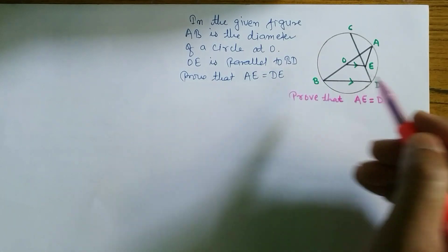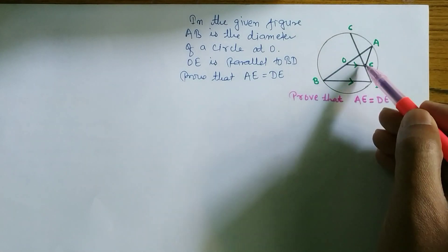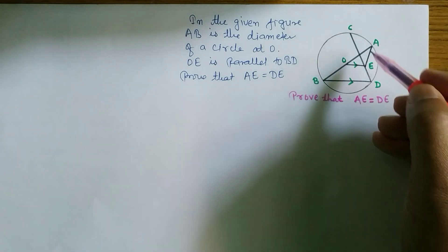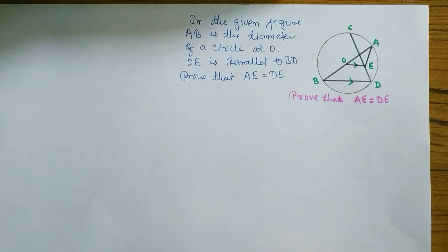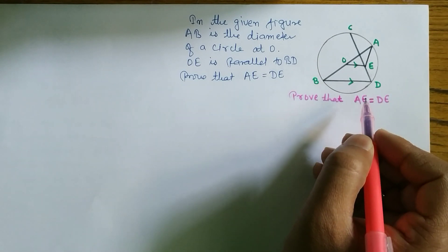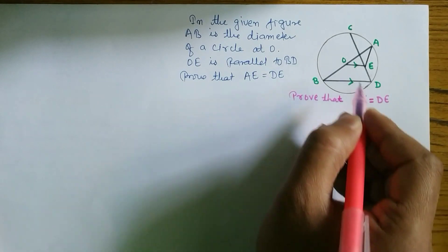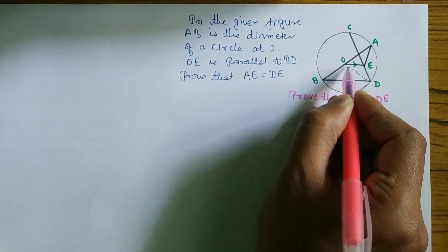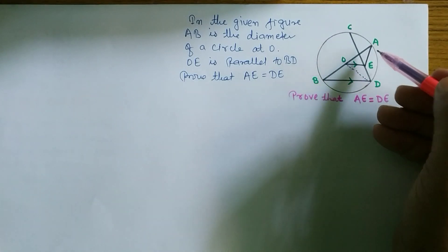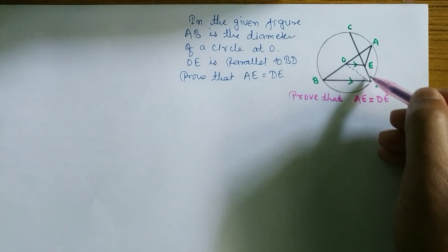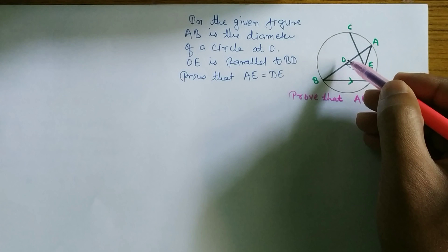We have to prove that AE and DE are equal. We have to join OD. So let's join OD. We have to show AE and DE are equal — it means we do a triangle congruence proof.